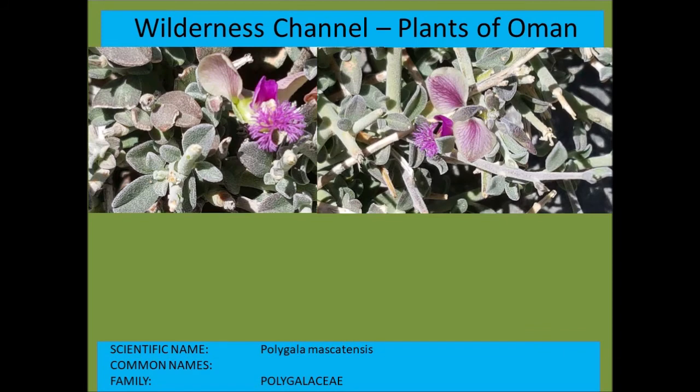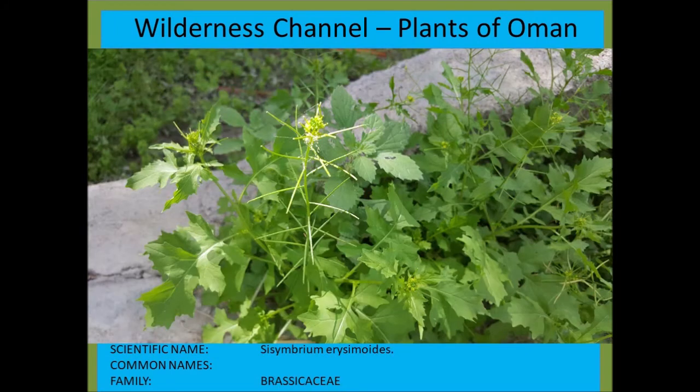Polygala muscatensis — a very pretty flower, very characteristic of that family. Sisymbrium erysimoides from the Brassicaceae, growing as a weed.